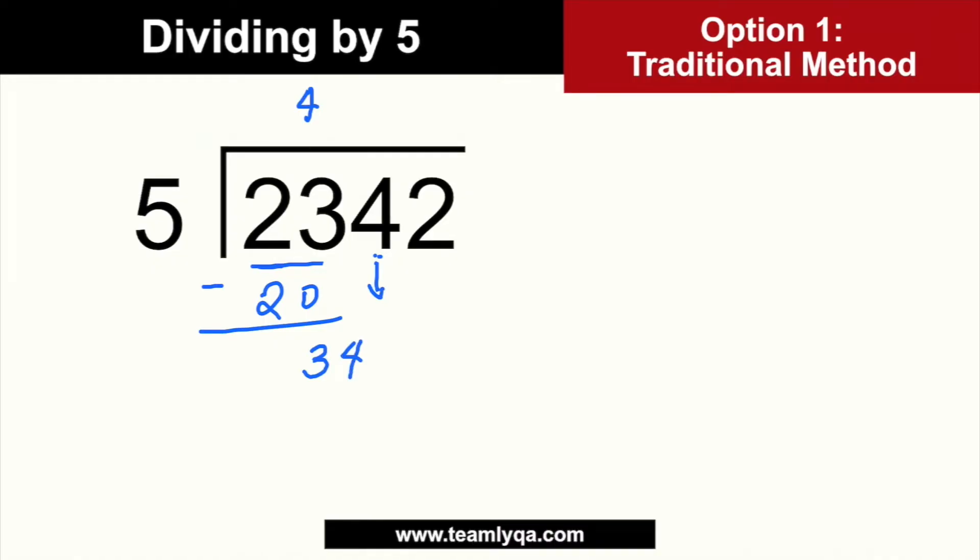34 divided by 5, hindi kasha ng 7, pero kasha ang 6. 6 times 5 is 30. Ma-minus mo uli siya. Babagsak ngayon yung 4 na remainder. At yung katabi na 2. So, 42 divided by 5 is 8. Tapos, meron kang 40. Ma-minus mo, this is 2.